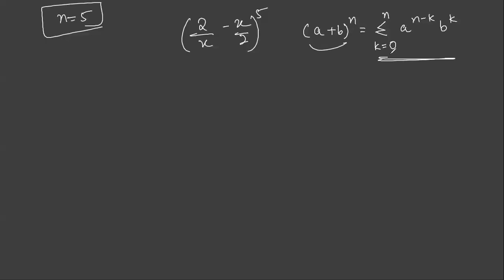Now, what is a? Here a is 2/x and b is x/2, raised to the power 5. Please understand: the formula uses a plus operator but the question has a minus operator. Whenever you have a minus operator between the two terms and you expand using the binomial theorem, every alternative term is negative — the first term is always positive, the second is negative, and so on.